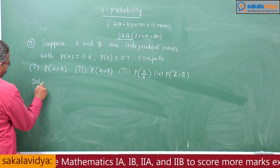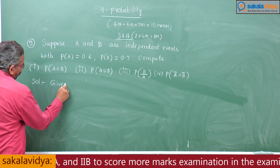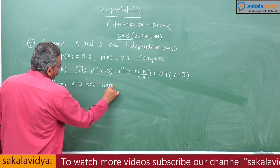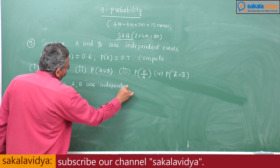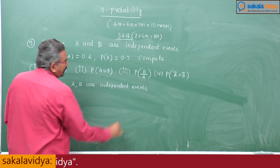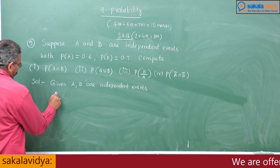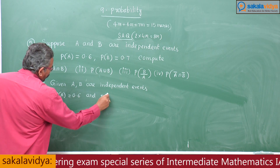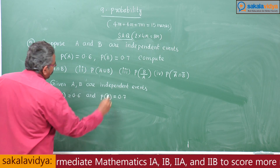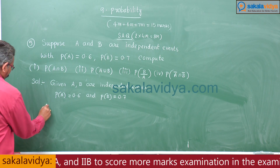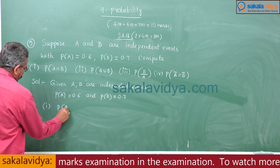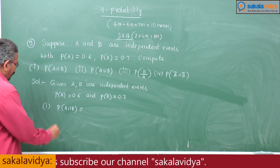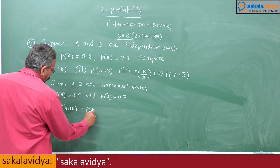Given: A and B are independent events, P(A) = 0.6 and P(B) = 0.7. First problem: P(A intersection B). Since A and B are independent events, by using the multiplication theorem, P(A intersection B) can be written as P(A) into P(B).